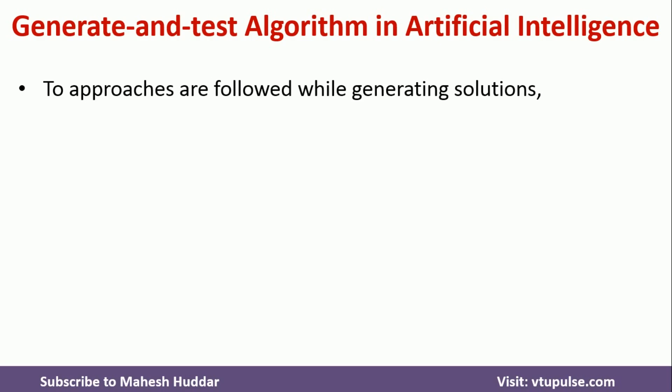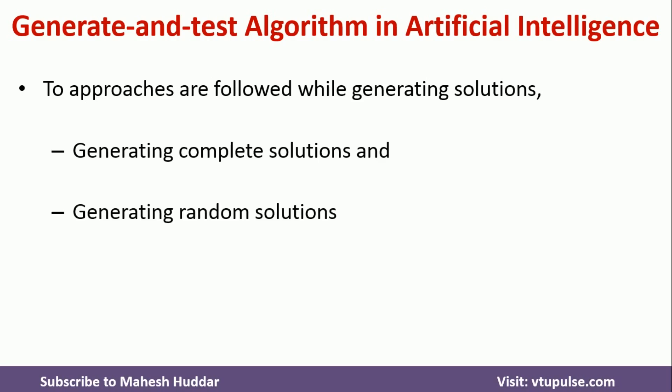There are mainly two approaches to generate the solutions. The first approach is to generate all possible solutions. The second approach is to generate some random solutions and then select one among those random solutions. Generating all possible solutions is a very difficult task because if you have thousands of solutions, it's very difficult to generate them all. So usually we generate random solutions and among those, we select one which is acceptable.